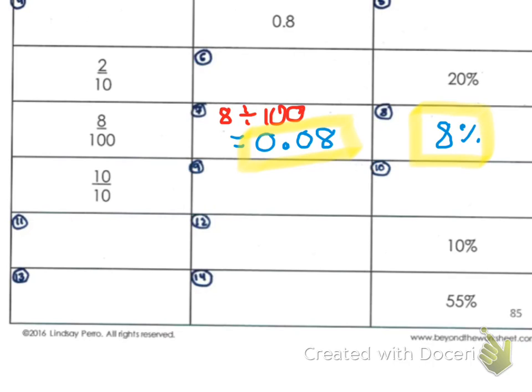And if you wanted to double-check that, you could try once again on your calculator, 8 divided by 100 for your fraction to make sure it's 0.08.